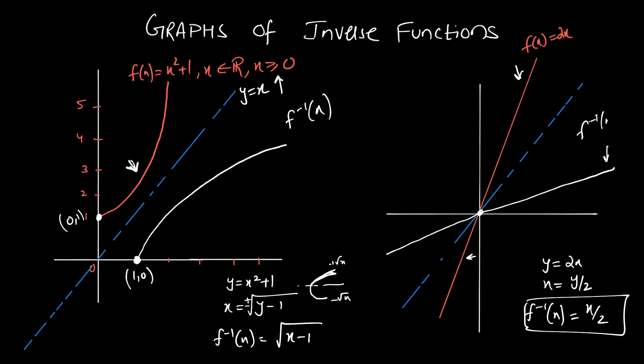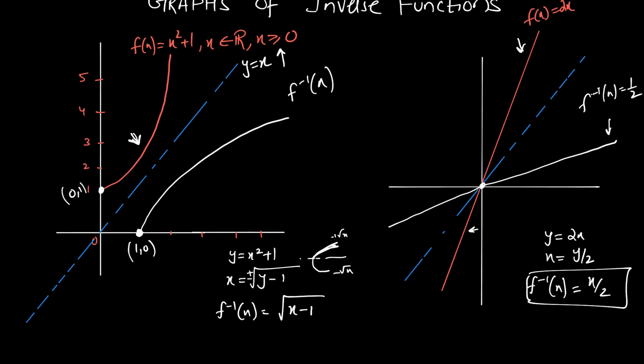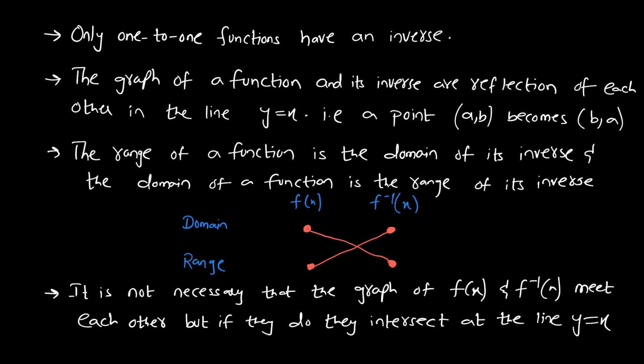To summarize: only a 1-to-1 function will have an inverse. The graph of a function and its inverse are reflections of each other in the line y = x, meaning point (a, b) becomes (b, a) on the inverse. The range of the function is the domain of its inverse, and the domain of the function is the range of its inverse.